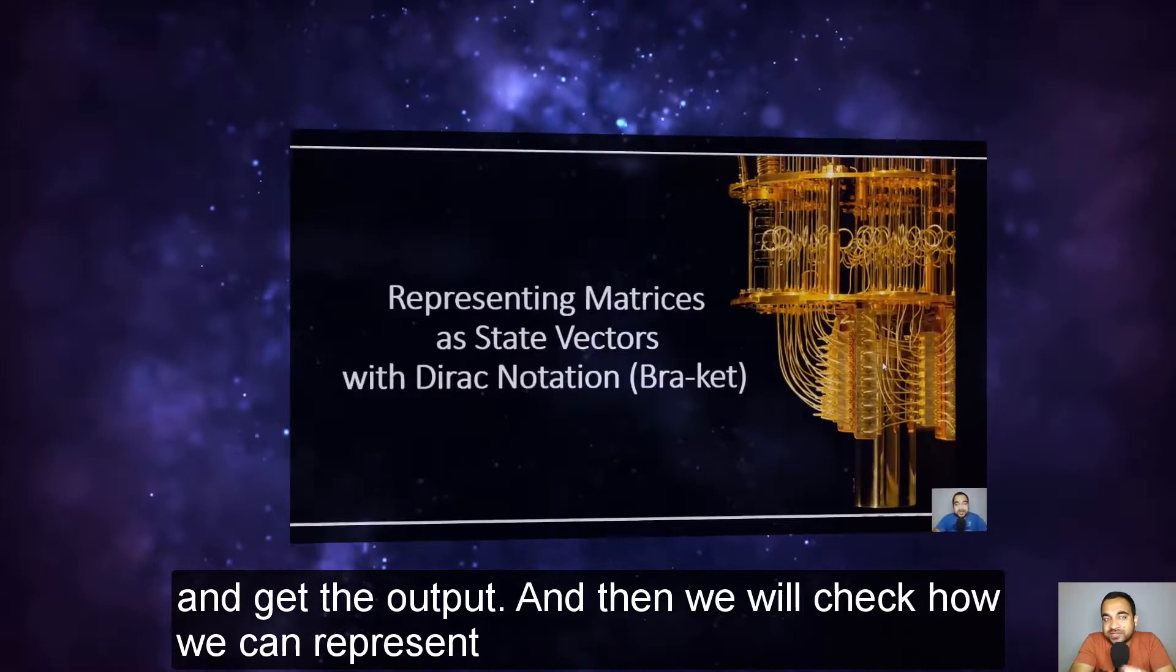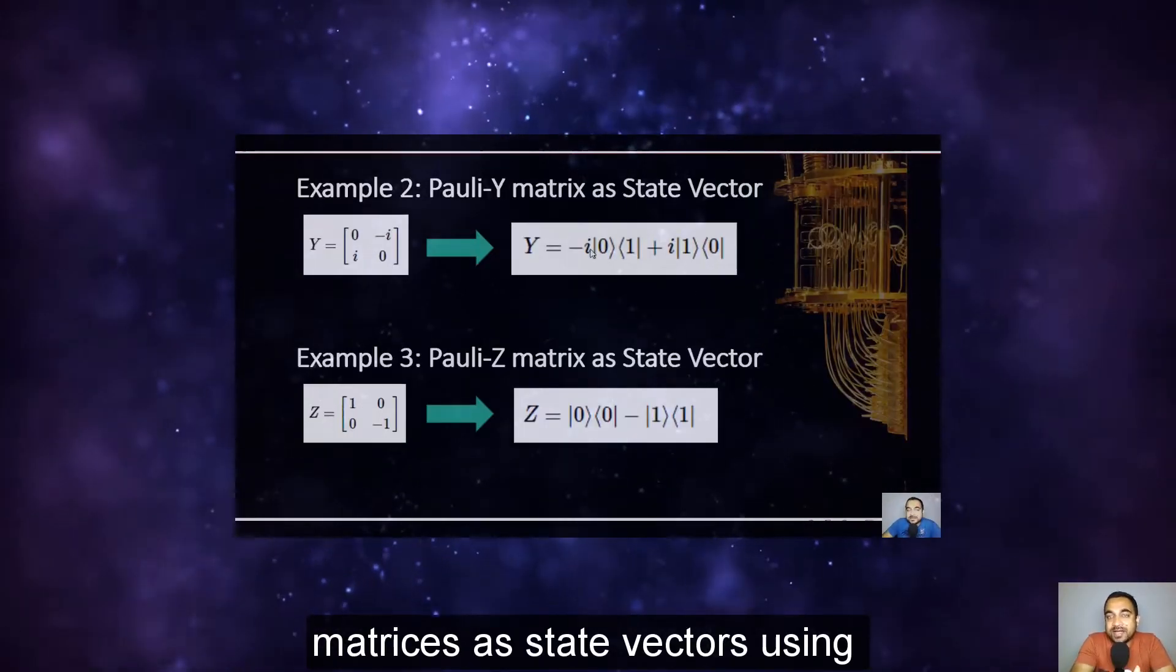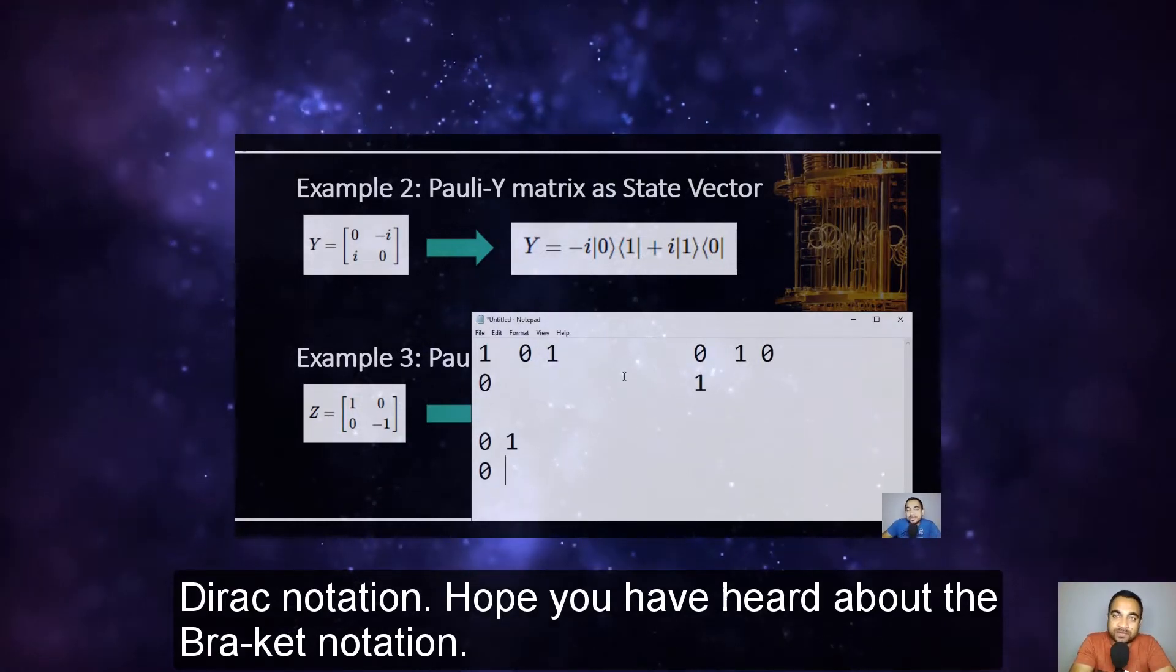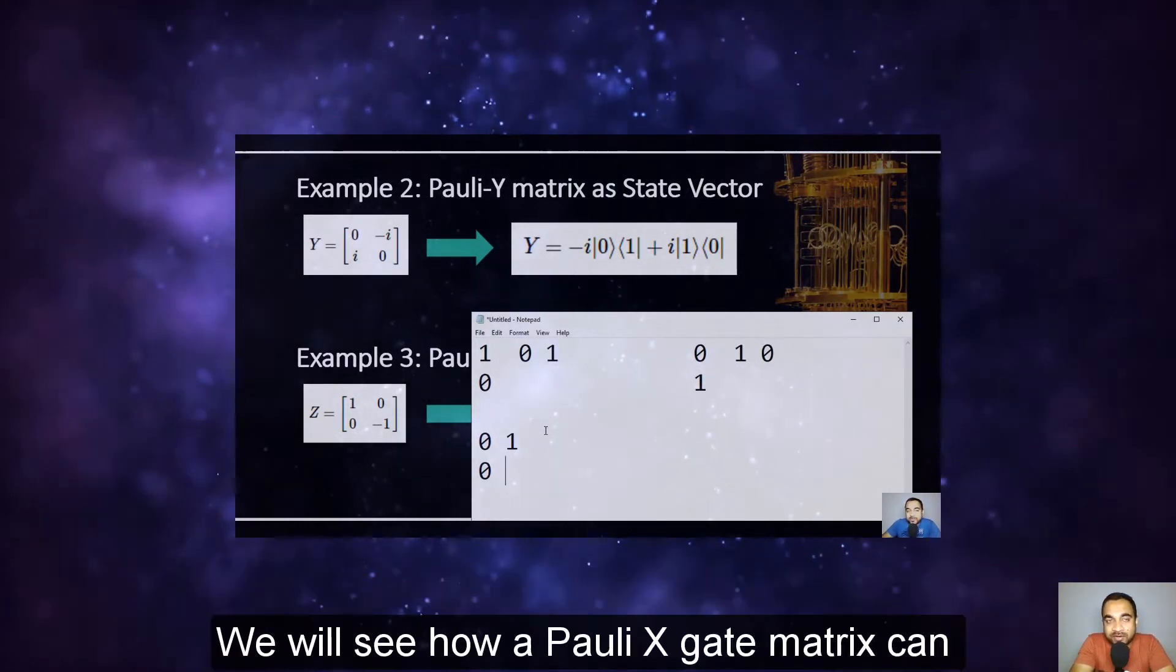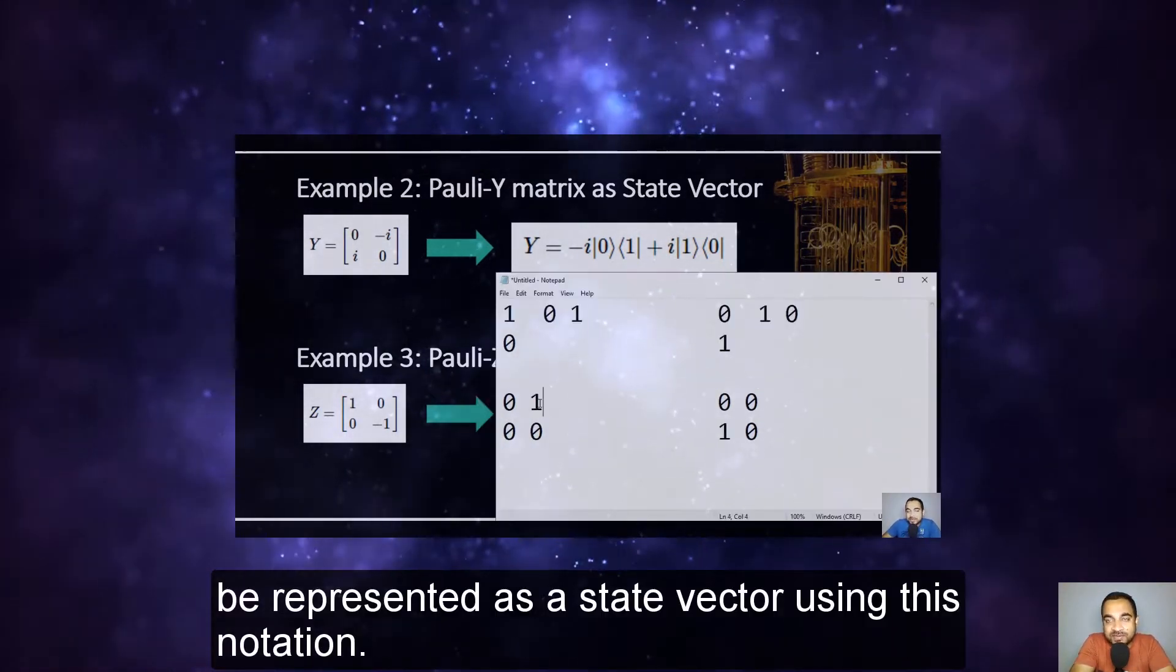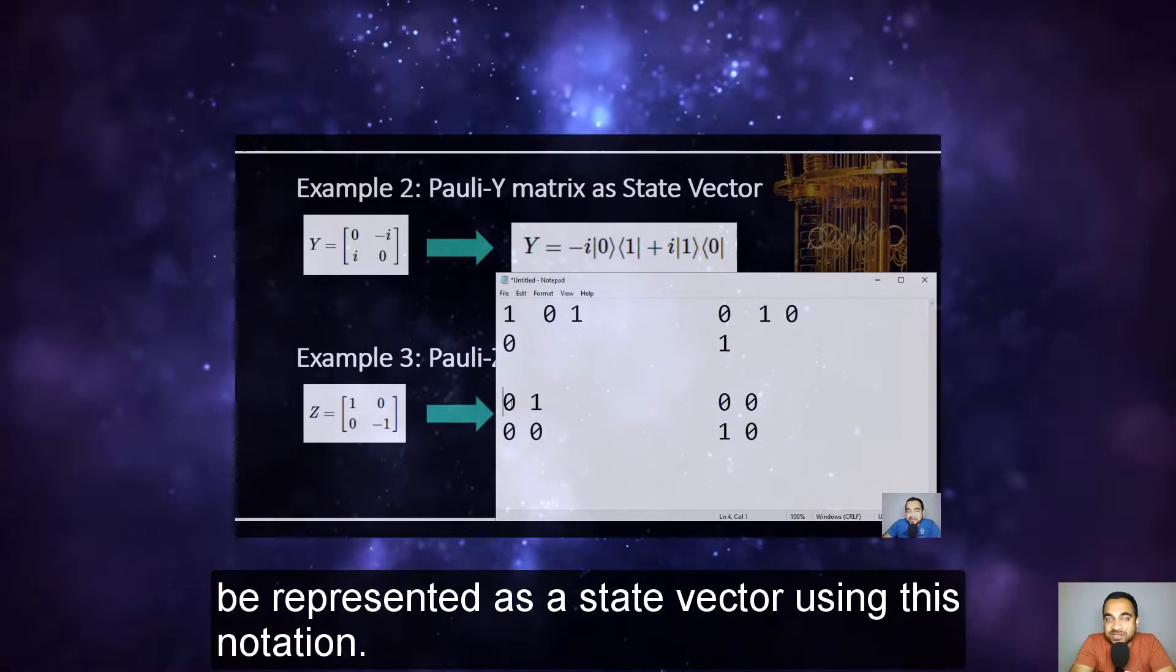And then we will check how we can represent matrices as state vectors using Dirac notation. Hope you have heard about the bracket notation. We will see how a Pauli X gate matrix can be represented as a state vector using this notation.